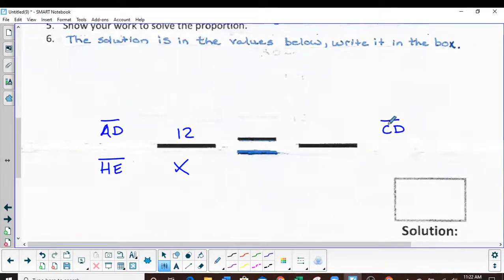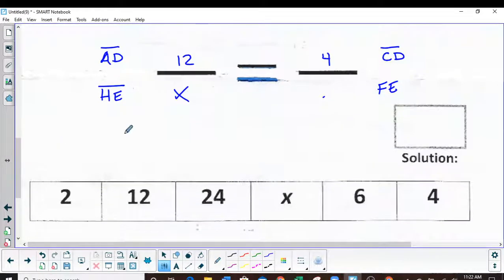So over here I'm gonna put line segment CD because we have a measurement on it, gives me a number. And then below it, it's got to correspond, so it's FE and I'm gonna put 2. This is not the only way to set up the proportion, it's just the way I've chosen.